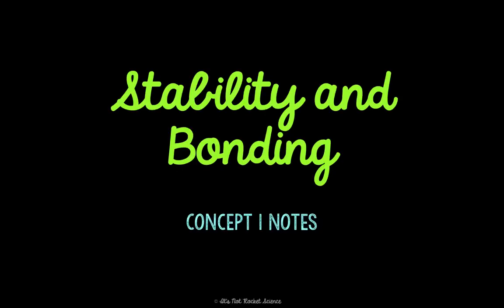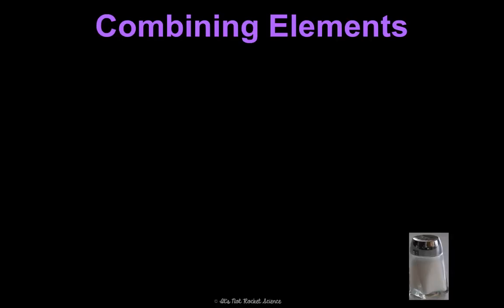This is Unit 8, Bonding. Getting really close to the end here. In Concept 1, we're going to talk about stability and why atoms of elements would choose to bond in the first place. And then we're going to introduce one type of bonding and then go from there. So let's just jump in.